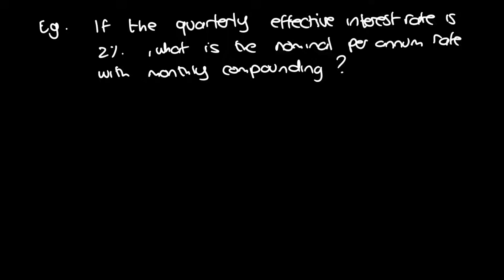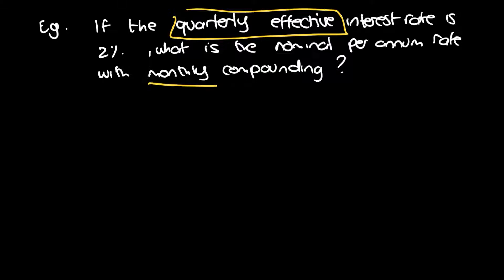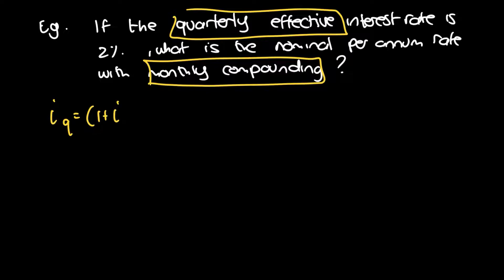This is giving us a hint that we want to use the equivalent effective interest rate formula, because we have a quarterly effective interest rate and we're looking to change it to monthly compounding — a glaring sign of the formula we need. So the formula is IQ equals 1 plus iM, to the power of M over Q, minus 1.